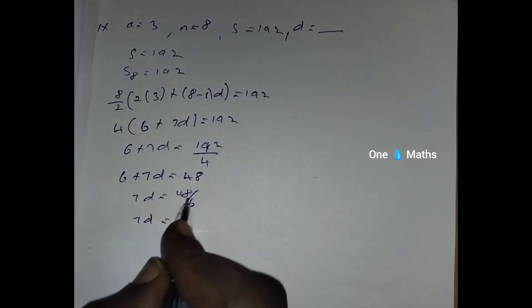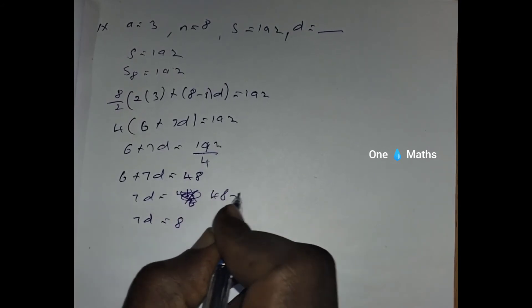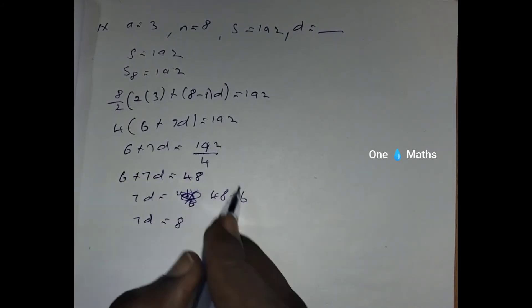Then divided by, not divided sorry, 48 minus 6, so plus 6 becomes minus 6, then 48 minus 6 becomes 42.